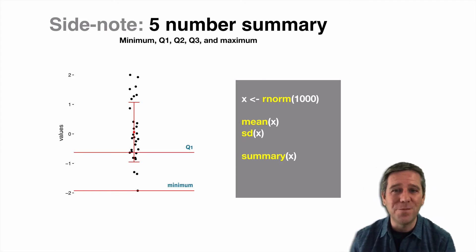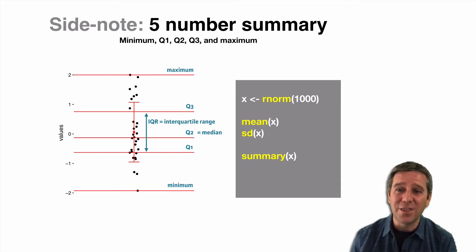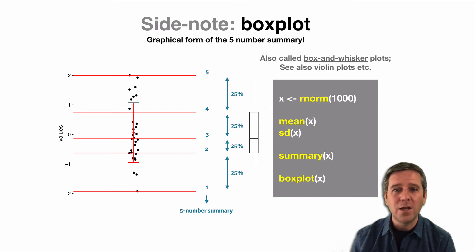We can also calculate summary statistics with the summary function. This will give us the minimum, the first quartile, the second quartile also known as the median, the third quartile, and the maximum values from our distribution of data.